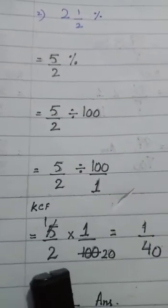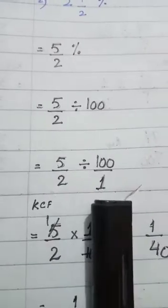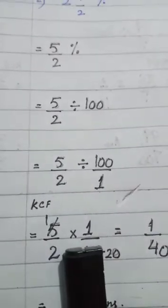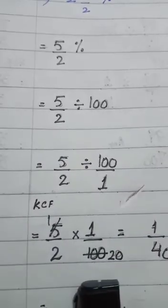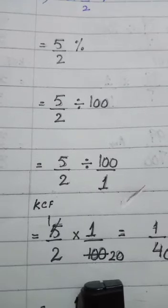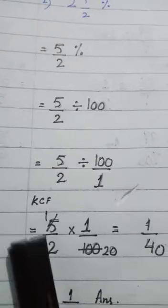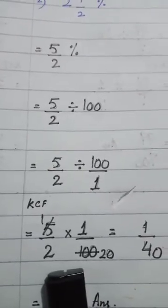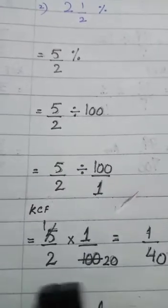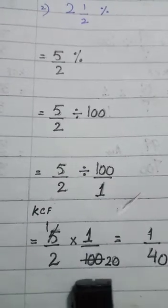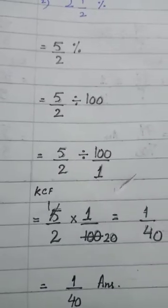Now use the K.C.F. method. Keep 5 upon 2, convert the divide sign into multiplication sign, and flip 100 upon 1 to get 1 upon 100. Now divide 5 and 100 using the table of 5: 5 ones are 5, and 5 twenties are 100. The numerator becomes 1 and the denominator becomes 2 into 20, which is 40. So the answer is 1 upon 40.